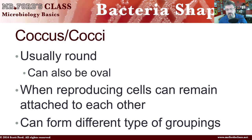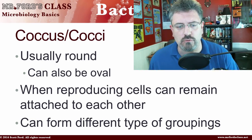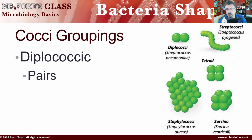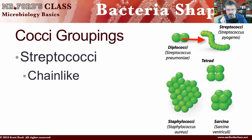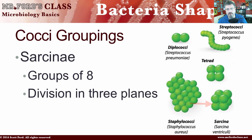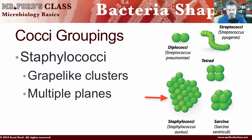When reproducing, the cells can remain attached to each other and form different types of groupings. Not only do you have to know the shapes, you have to know the clumping they can go into — and this will be on a test, guaranteed. With cocci, you have the diplococci, which is pairs. You have the streptococci — you've probably heard of strep — which is chain-like. Then you have the tetrad, which is a grouping of four divided in two planes. You have sarcina, which is a group of eight divided into three planes. And then you have staphylococci, which is grape-like clusters in multiple planes.